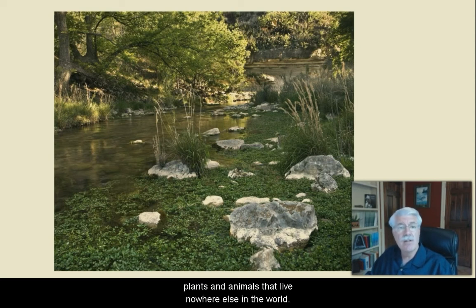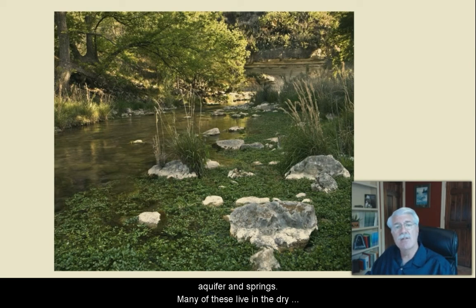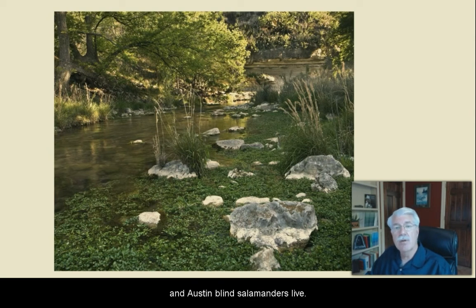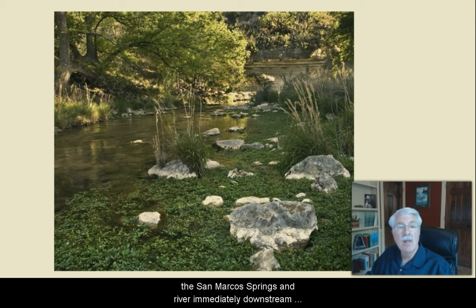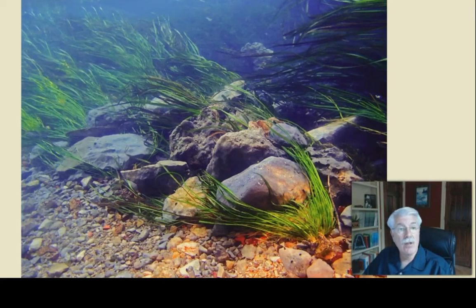While many aquifers don't contain aquatic life, most major springs in Texas do. Some even contain species found nowhere else. The Edwards Aquifer ecosystem and its springs contain over 60 species of plants and animals that live nowhere else in the world. Species of salamanders, fish, amphipods, beetles, spiders, and others have evolved in these isolated habitats within the aquifer and springs. Many live in the dry caves above the water table, and others live in the many springs fed by the aquifer. Barton Springs, located in Austin, is the only place where the Barton Springs and Austin blind salamanders live. Fountain darters live only in the San Marcos and Comal Rivers. Texas wild rice lives only in the San Marcos Springs and the river immediately downstream of the springs. And here's a picture of that wild rice.